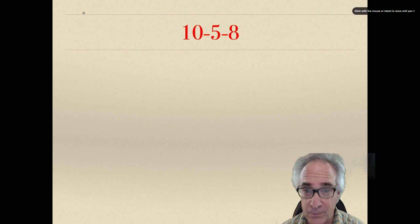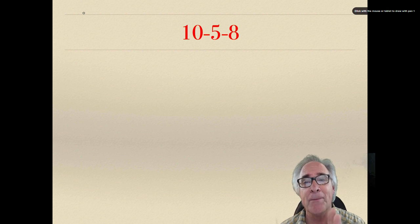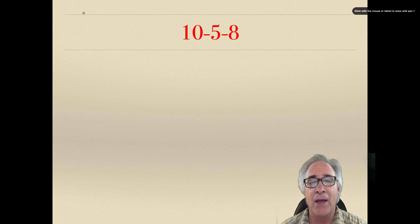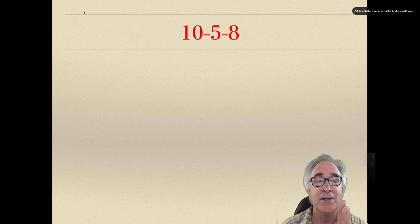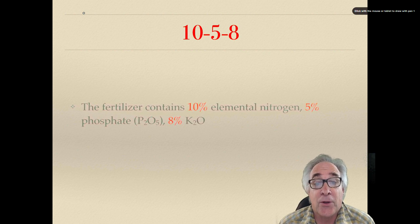10-5-8. That is the percentage of each of those macro elements, those macronutrients that are in fertilizer: 10% nitrogen, 5% phosphate, and 8% potassium. That's what those numbers mean.